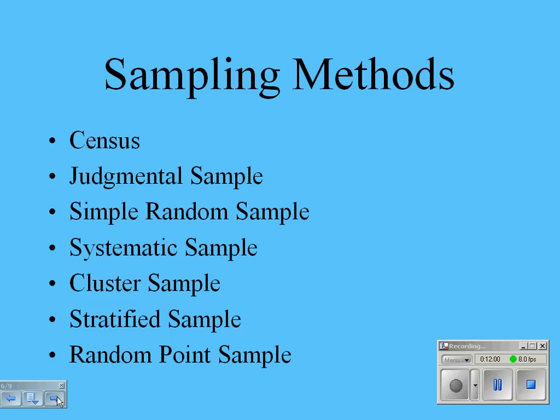Finally, a random point sample involves randomly picking an x-coordinate and y-coordinate and picking the individual at or nearest that intersection. I might do soil samples in a field using this method—pick a random point and that's where I take the soil sample.